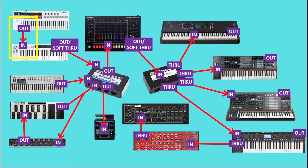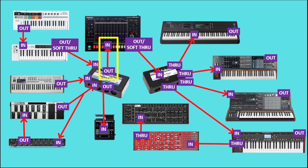In my setup I have a KeyStep Pro going from its MIDI out to the MIDI in on the KeyStep 37. The KeyStep 37 then goes from its MIDI out to the in on a merge box. However, although the KeyStep 37 only has an out port, this is set as a soft through in its settings. The merge box then runs to the TR8S drum machine, which goes out to the through box and on to all the other synths. Again, although the TR8S only has a single MIDI out, this has been set to soft through in its utility menu.